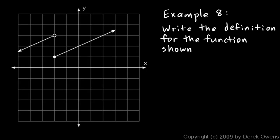Example eight: we're shown a graph of a function and told to write the definition for it. This is in two pieces, so we need to look at these lines on the graph and discern what equations represent those lines, and for what x values those equations apply. This will be a piecewise function, so we write f of x equals with curly braces and two pieces. Let's think about this first line.